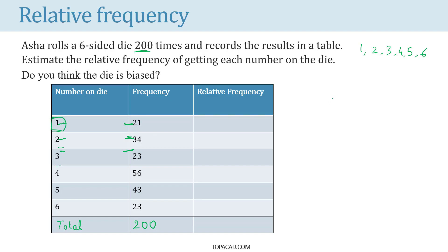When Asha rolled the die 200 times, she got number 1 21 times. So, if Asha rolls the die once, what is the probability of getting number 1 on the die?